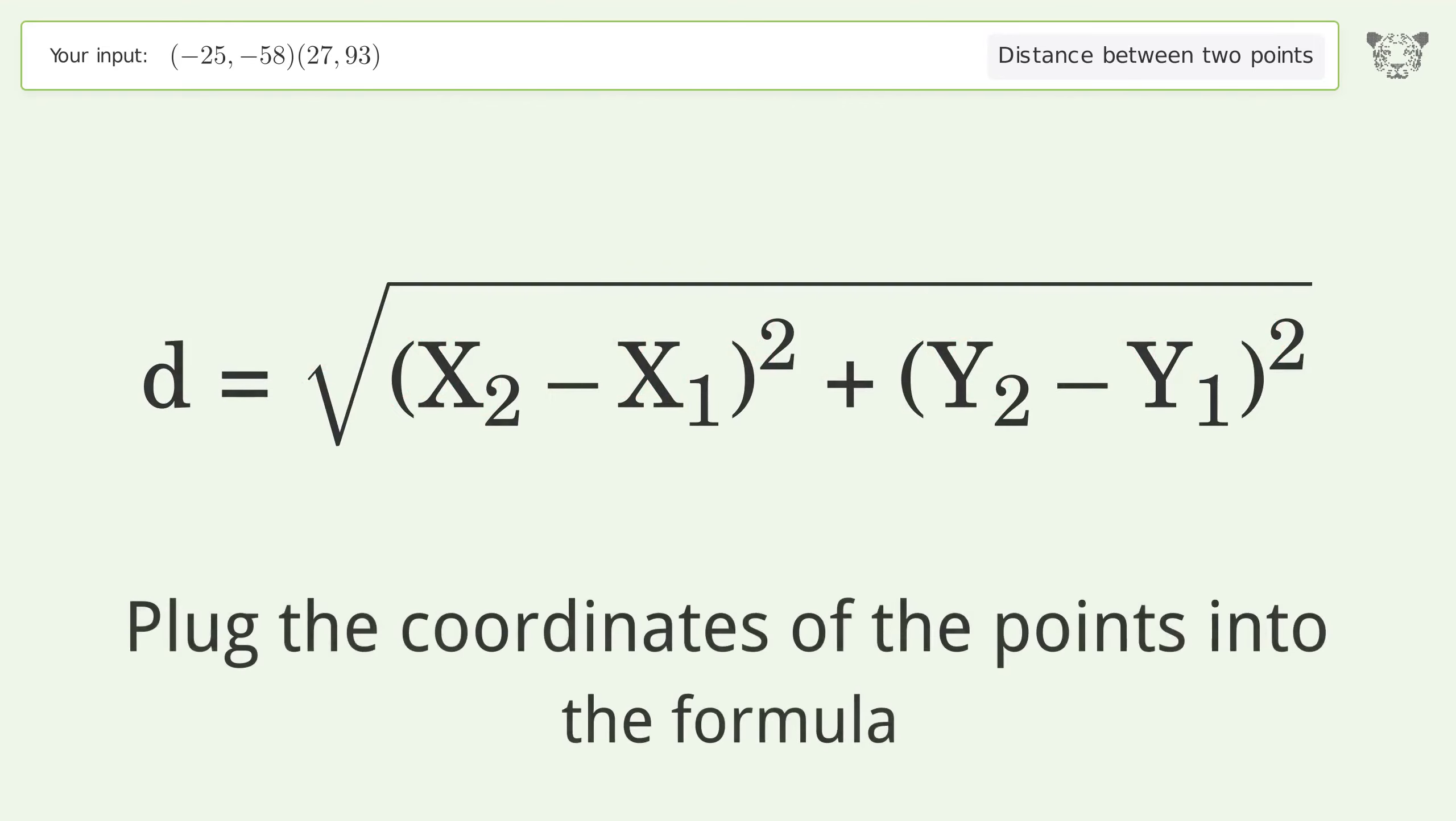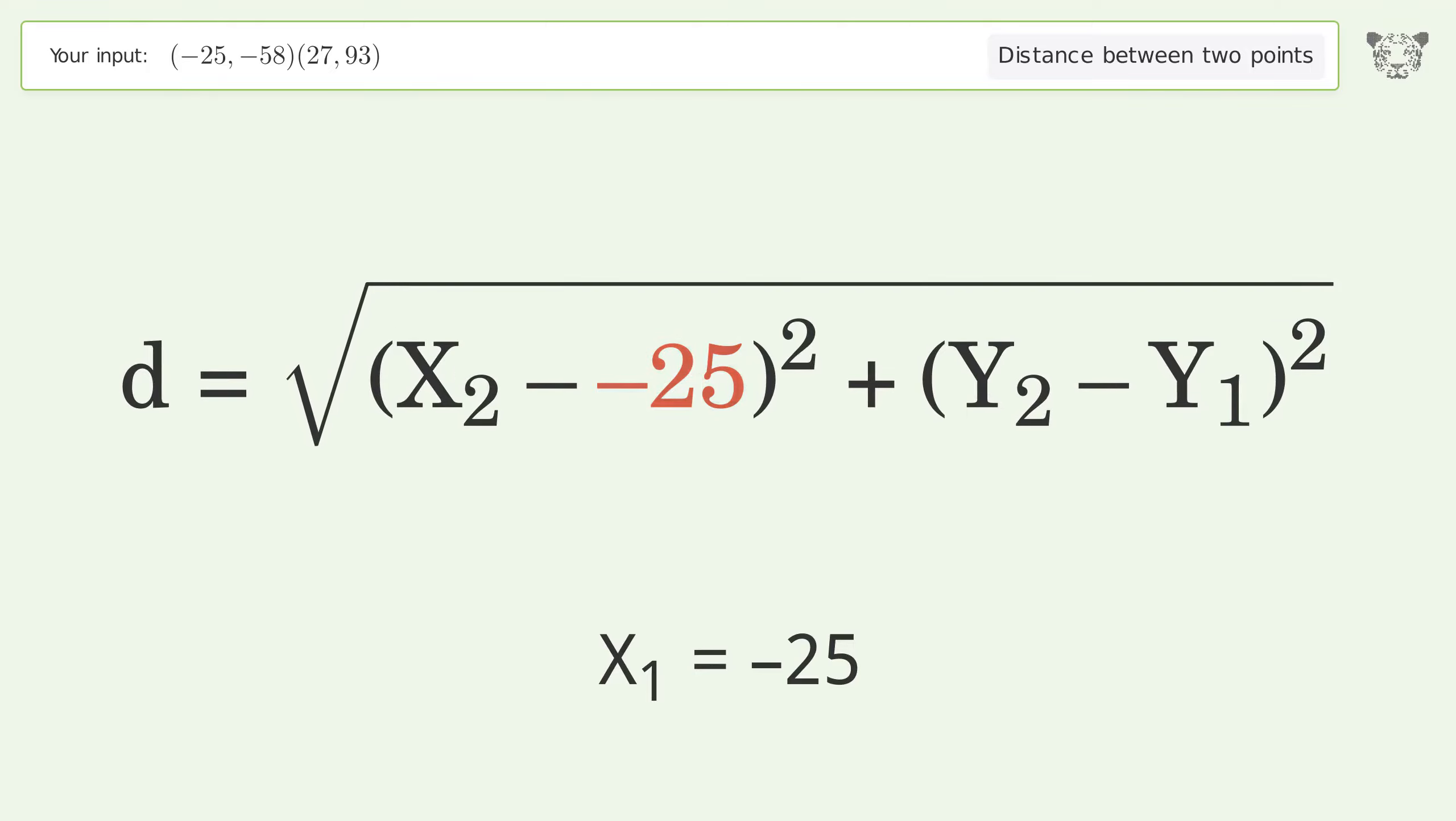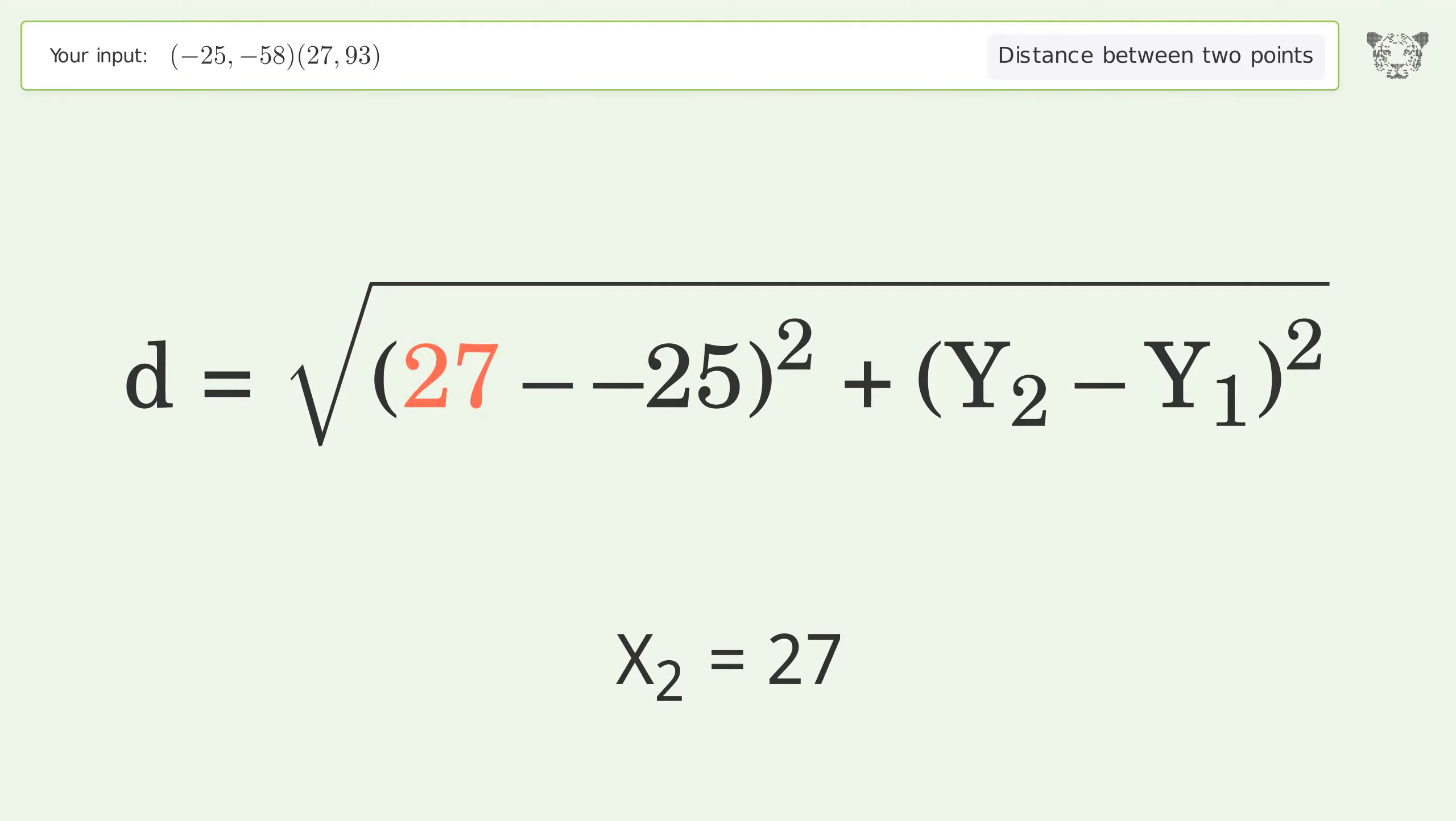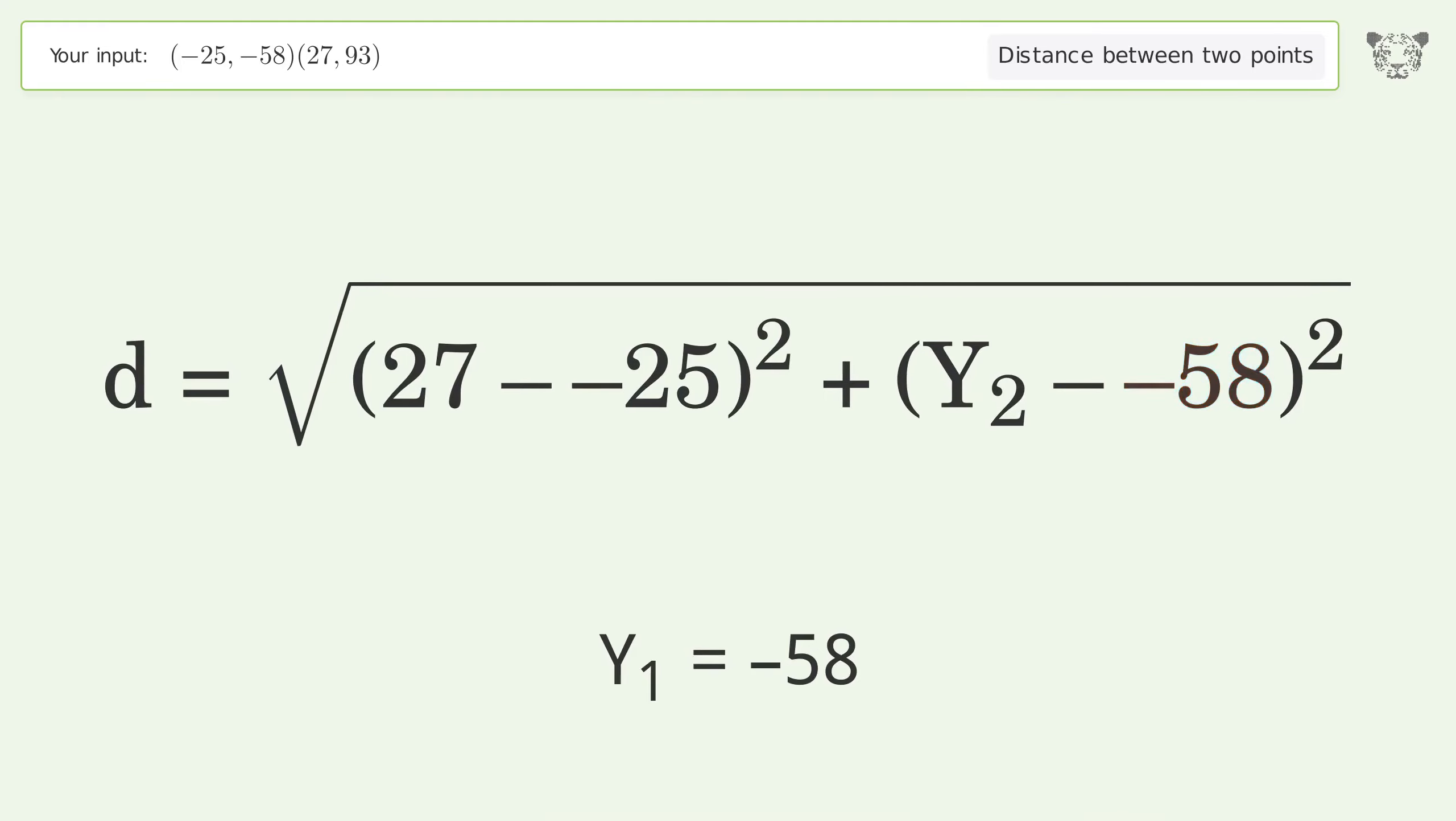Plug the coordinates of the points into the formula: x1 equals negative 25, x2 equals 27, y1 equals negative 58, y2 equals 93.